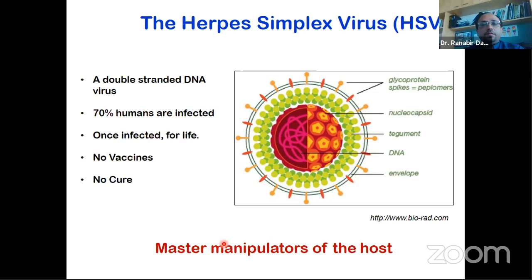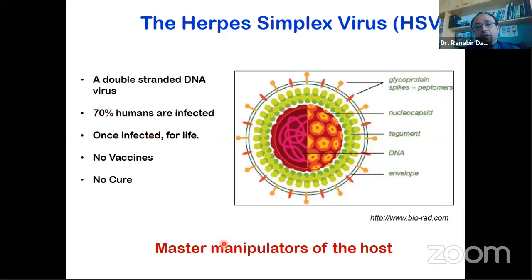Our model system for understanding immune response evasion is the herpes simplex virus — a double-stranded DNA virus. Around 70% of humans are infected with this virus, possibly all of us; we may not know because it's asymptomatic. Once infected, this virus stays with us for life. The whole immune system is not able to eradicate it. We do not currently have a vaccine, and there is no proper cure that will resolve the infection immediately.